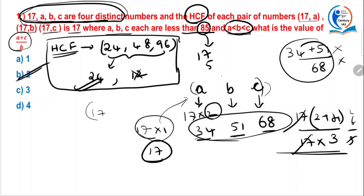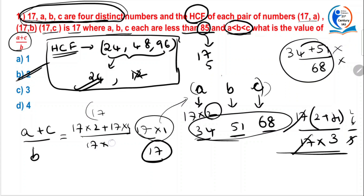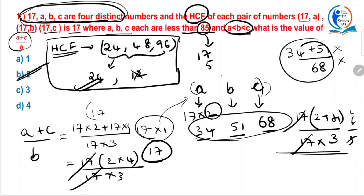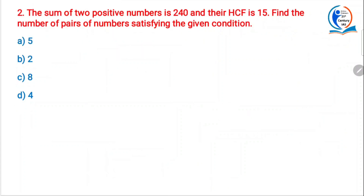A plus C by B — here A is 17×2, C is 17×4, and B is 17×3. Take 17 common: you get (2+4) / 3 = 6/3 = 2. This is the easy way of calculation instead of adding and then dividing. Remember this — you can save time and use it for the next question.